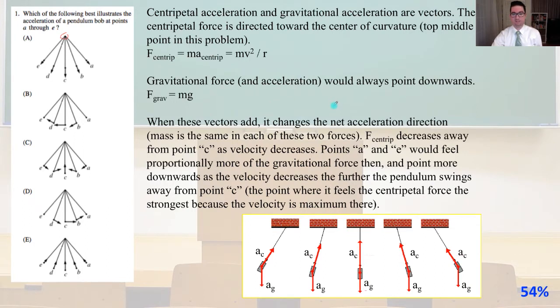Mass is the same in each of these two forces. The centripetal force decreases away from point C as velocity decreases. Points A through E would feel proportionally more of the gravitational force and point more downwards as the velocity decreases. The point where the centripetal force is strongest is at point C because the velocity is maximum there.